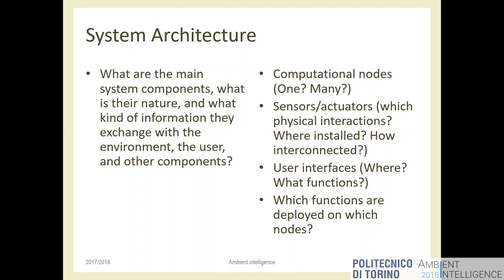The user interface might also be simplified buttons or LEDs or an LCD — for example, in a shower environment you can't use a touchscreen because of humidity, so you embed simplified buttons and maybe a small display. Which functions are deployed on which nodes? If you have three computers, what is running on each one, and how is computation split across the different nodes?